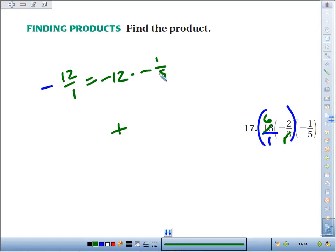12 times one-fifth, we just have 12 fifths. Or I suppose we could convert that to a mixed fraction, that would be 2 and 2 fifths.